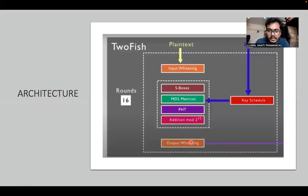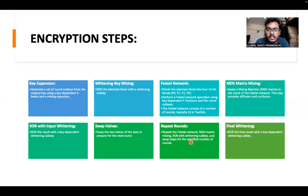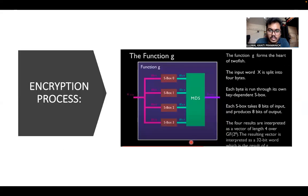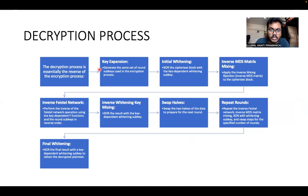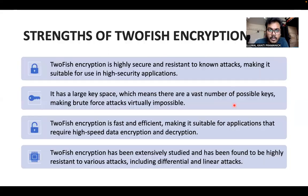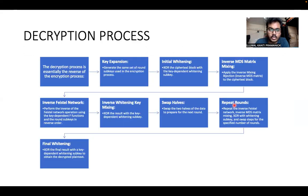For decryption, we reverse all those steps. First, expand the key. Then perform initial whitening. Then apply MDS and the Feistel network. Then apply inverse whitening with the keys. Repeat the rounds, and finally perform output whitening to recover the original plaintext.